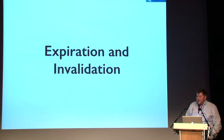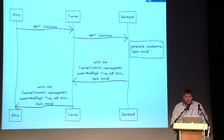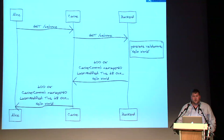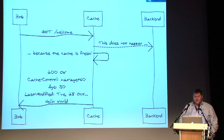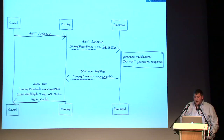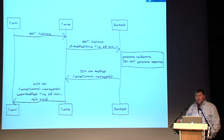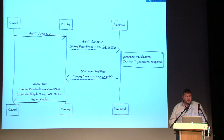You can combine expiration and validation. Alice requests /welcome, the app server generates validators and returns Cache-Control: max-age=60. The next request from Bob — 30 seconds later — goes to the cache; because the max-age hasn't passed, there's no backend request at all. After 60 seconds, a new request checks If-Modified-Since with the backend, which either generates a new response or returns 304 Not Modified with another Cache-Control: max-age=60. The goal is to alleviate load on your application servers by caching HTTP responses.